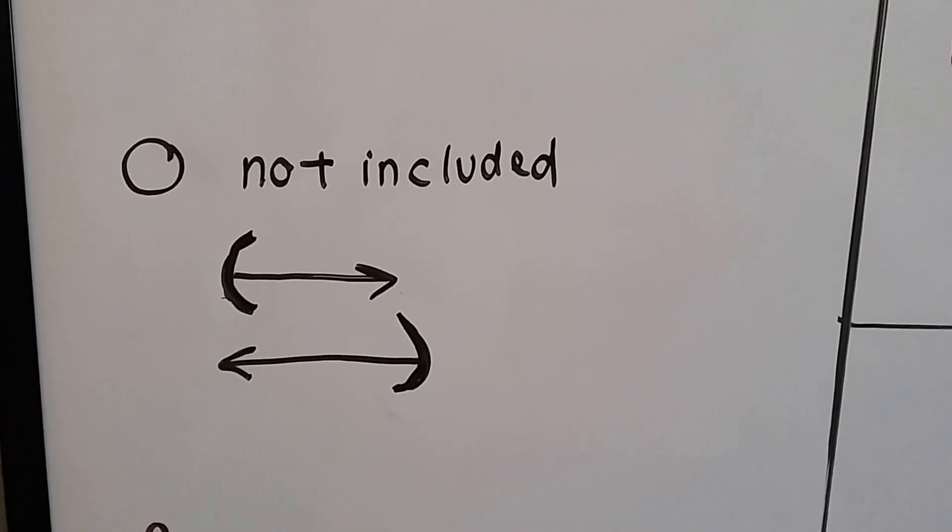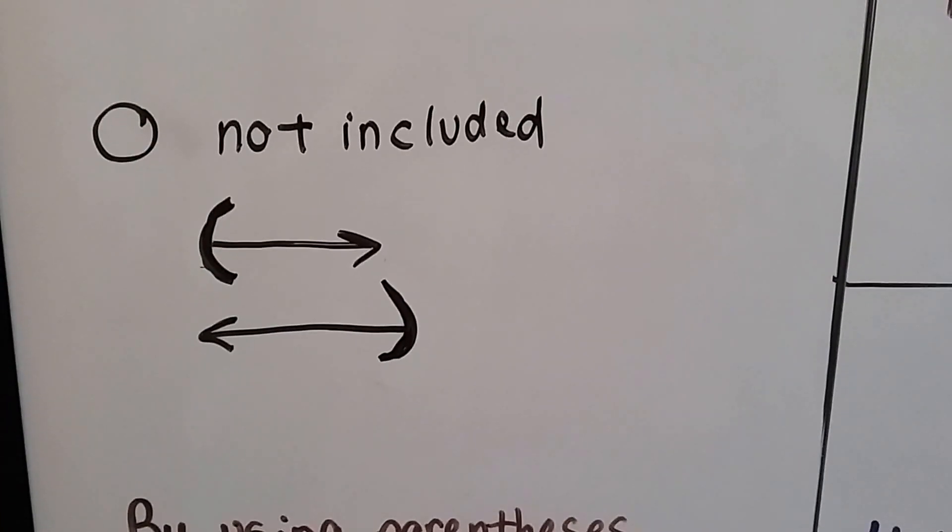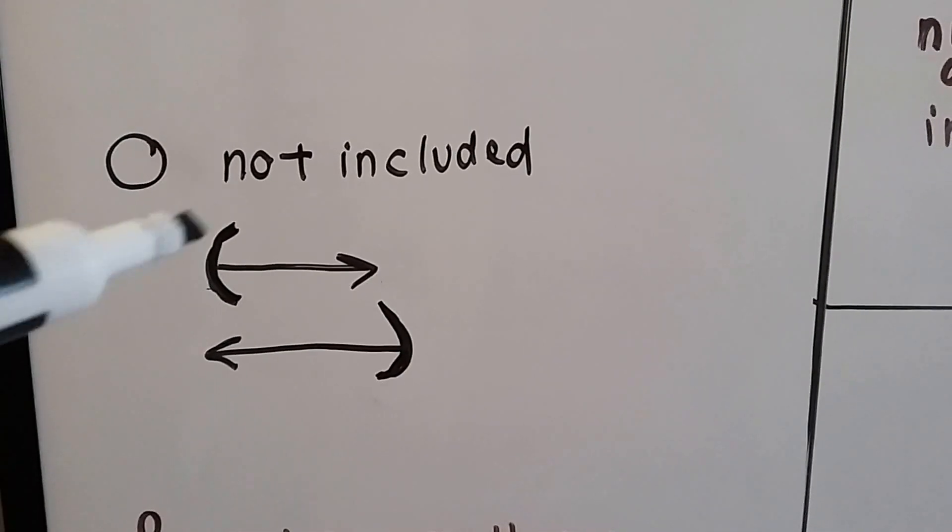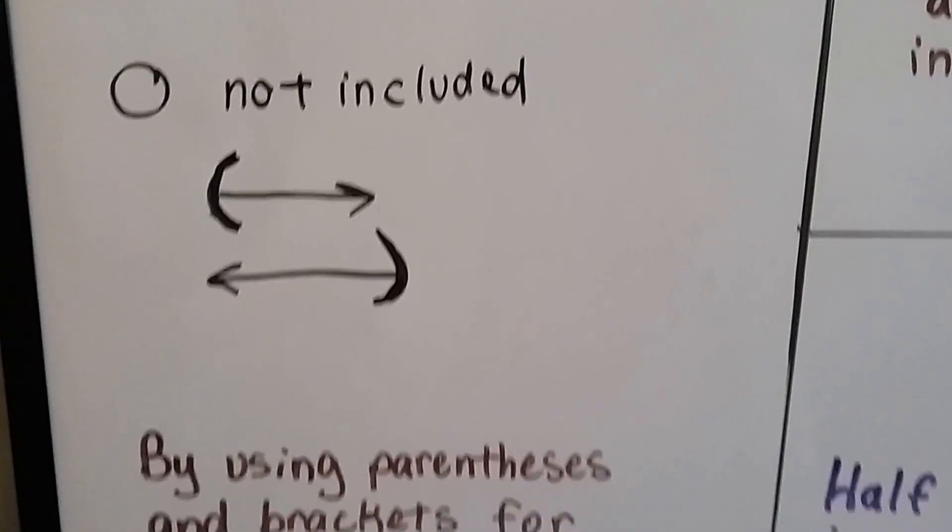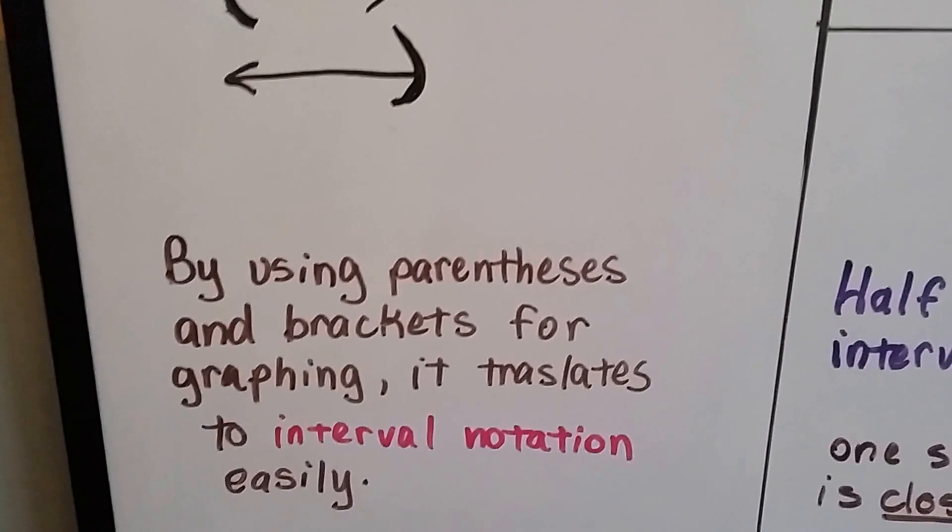If it's not included, then it's an open circle, like a zero. Or we could use parentheses. So think of the not included like the O, and that's part of the O. And by using parentheses and brackets for graphing, it translates to interval notation easily.